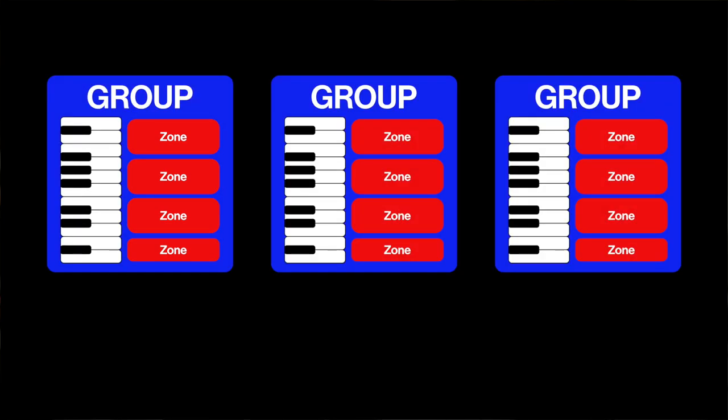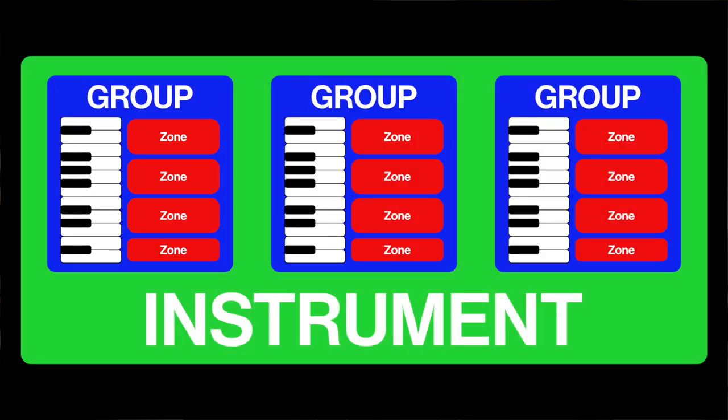Before we take a look at effects, let's recap the signal flow within Kontakt because it is a little bit tricky to wrap your head around. If you've been following along with chapter 2, you know that there are zones which contain the samples, and those zones can be stretched out over different notes or different velocity ranges. Those zones are then collected up into different groups, which are then collected up into an instrument. Understanding those levels is really important for building your library, and when it comes to effects, understanding the signal flow is also very important.